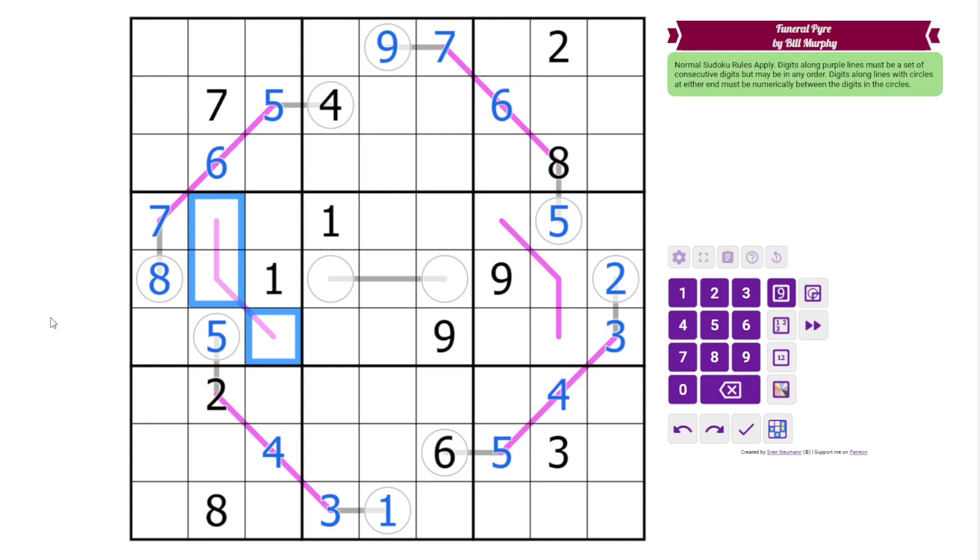Okay. These lines are probably pretty restricted at this point. So the only way we can make a set of three consecutive digits here is two, three, four. We've got some high digits here, so we obviously can't put a nine. Nine has to go with seven, eight, nine.